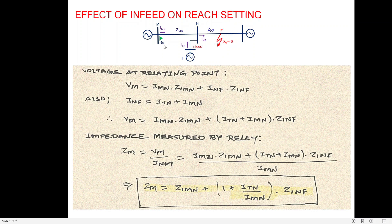The voltage at the relaying point RM will be IMN times Z1MN plus INF times Z1NF, where Z1MN is the positive sequence impedance of line MN and Z1NF is the positive sequence impedance from bus N to fault point F. At bus N, the fault current INF equals IMN plus ITN.